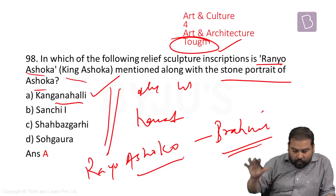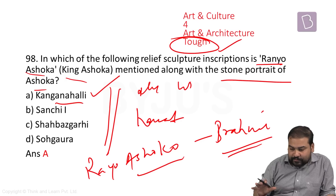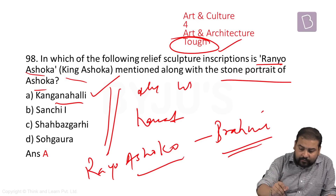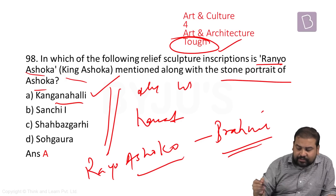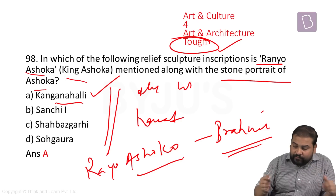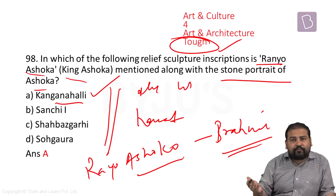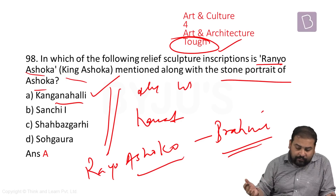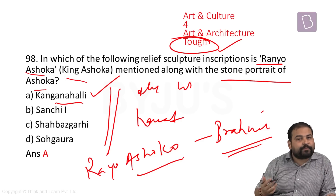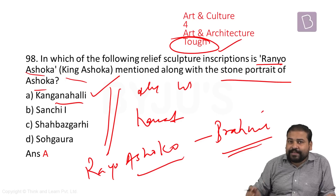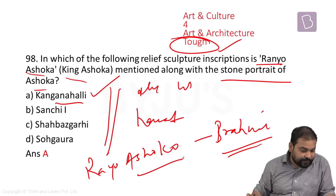Overall, if you look at the total art and culture areas, there were four questions and only one was tough, one was easy, and two were moderate. So depending upon your preparation, you could have got some very easy questions here.